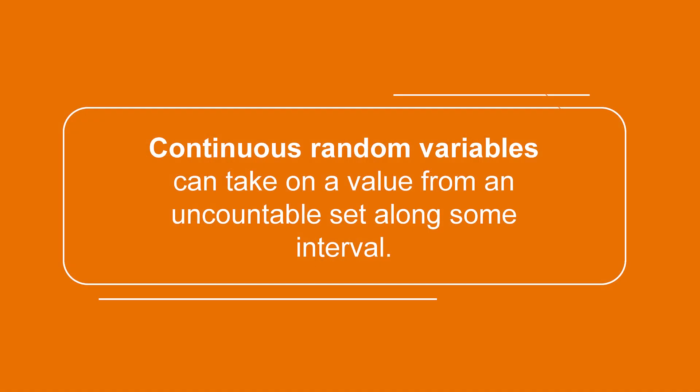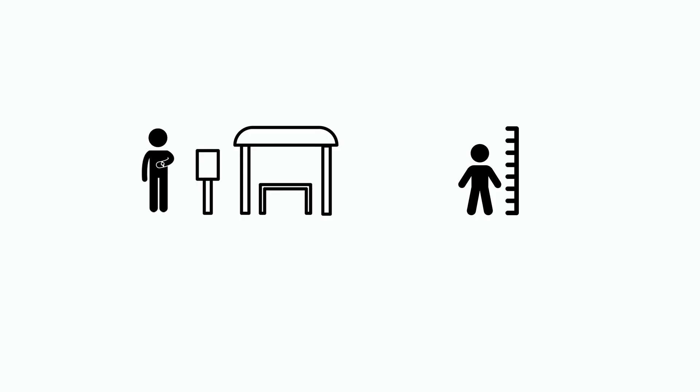Definitionally, a continuous random variable is a random variable that can take on a value from an uncountable set along some interval. Examples include the waiting time for a bus or the height of a person. Yes, in both cases, we may measure the outcomes in certain units, such as rounding the waiting time to minutes or the height to inches.